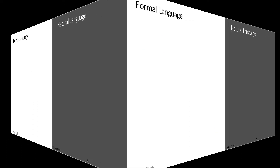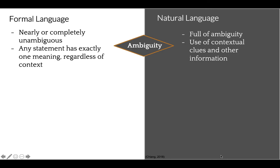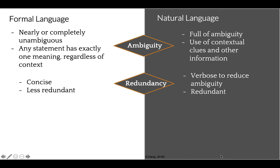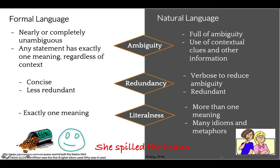Unstructured data is natural language. What is the difference between formal language and natural language? Natural language is ambiguous — we use contextual clues and other information. Formal language is not ambiguous and has one meaning regardless of context. Natural language is also redundant to reduce ambiguity, and we have more than one meaning, usually full of idioms and metaphors. For instance, 'spilling the beans' may mean something else than literally spilling beans. All this shows how difficult it is for a machine to process natural language.